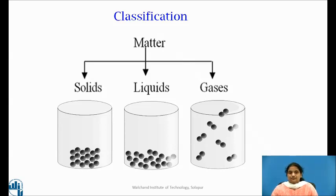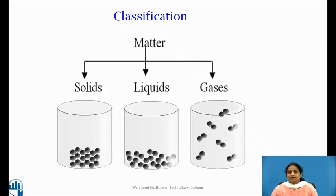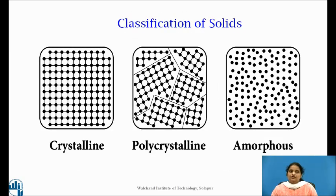Solid matter is composed of tightly packed particles; a solid will retain its shape and the particles are not free to move around. Liquid matter is made of more loosely packed particles — it will take the shape of its container, and particles can move about within the liquid but they are packed densely enough that volume is maintained. Gaseous matter is composed of particles packed so loosely that it has neither a definite shape nor a definite volume, and a gas can be compressed.